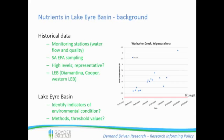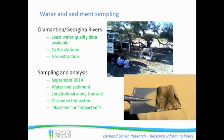We were looking at indicators such as nutrients, but also a few other parameters, such as elements, and looking at different methods of measuring these indicators of environmental condition throughout the basin. We focused on the Diamantina and Georgina rivers, mainly because we're chemists and there wasn't very much water quality data available here.